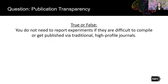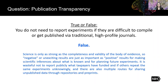True or false? You do not need to report experiments if they are difficult to compile or get published via traditional high-profile journals. The answer is false. Science is only as strong as the completeness and validity of the body of evidence, so negative or unexciting results are just as important as positive results. It is wasteful not to report publicly what taxpayers have funded, and there are multiple routes for sharing unpublished data through repositories and preprints.